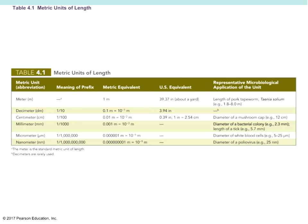Millimeters: on that meter stick, the larger lines are centimeters, and in between those centimeter lines are millimeters. There are 10 millimeters in each centimeter, and since there are 100 centimeters in a meter, that means there are 1,000 millimeters in one meter. Keep in mind that the millimeter level is the smallest we'll be able to see with the naked eye.